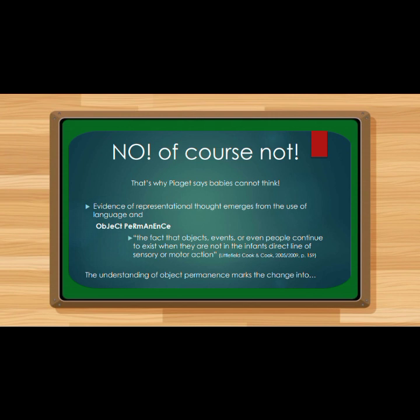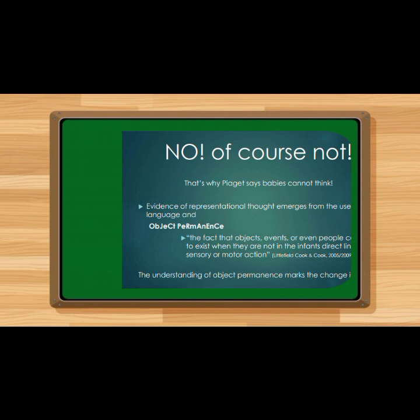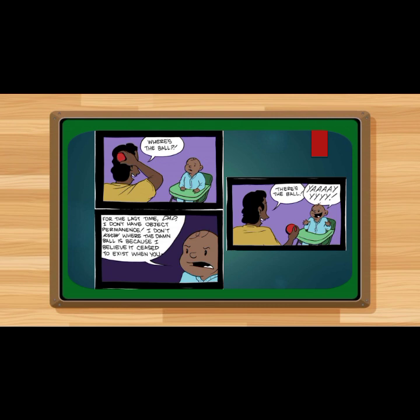For example, a daddy is holding a ball, then tries to hide it. The baby doesn't have object permanence yet, so the baby believes the ball ceased to exist when hidden — 'I don't know where the ball is.' But when the daddy shows the ball again, the baby will be happy seeing it. That is object permanence in the sensorimotor stage as the first stage in Piaget's stages of cognitive development.